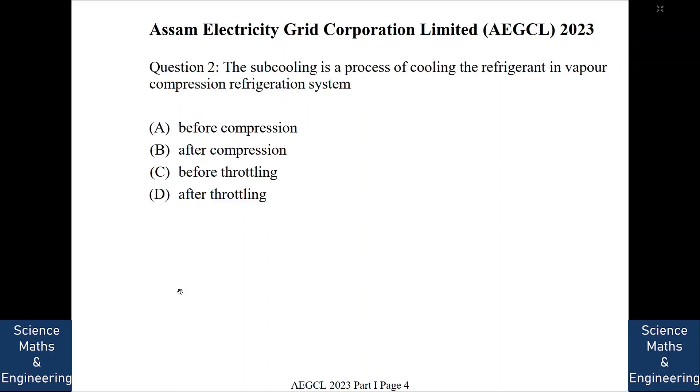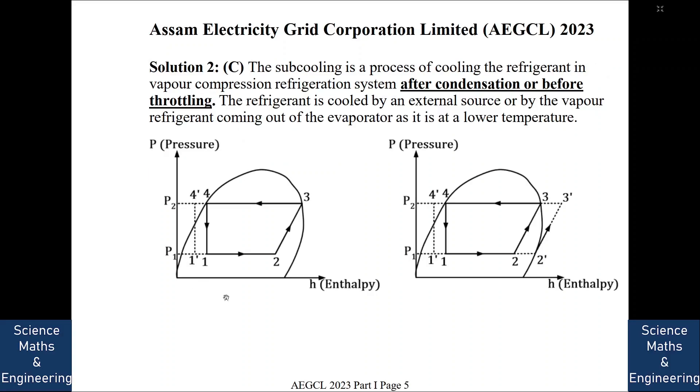The subcooling is a process of cooling the refrigerant in vapor compression refrigeration after condensation or before throttling. So what we see is that 3 to 4 is the process of condensation, 4 to 1 is the process of throttling, 1 to 2 is the evaporator and 2 to 3 is the compressor.